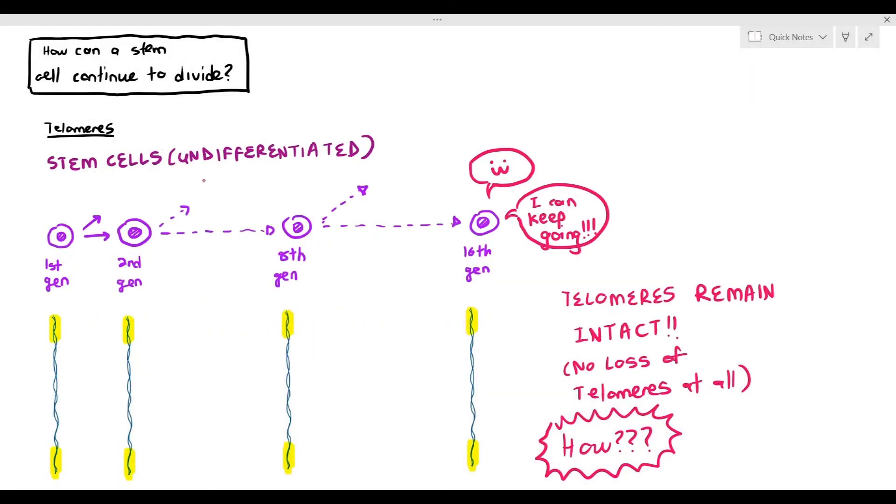If the stem cell continues to divide from the first generation to the second generation, to the eighth generation, to the sixteenth generation, notice the length of telomeres. This is weird, isn't it? The telomeres remain intact. So the cell, the sixteenth generation of stem cell, can just keep on going if it wants to. There is no loss of telomeres noticed at all within the stem cells. How is that possible?